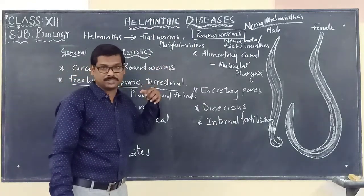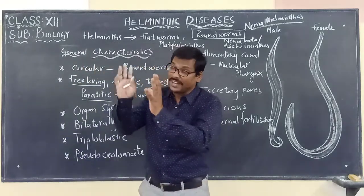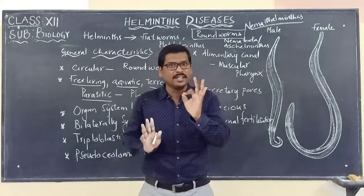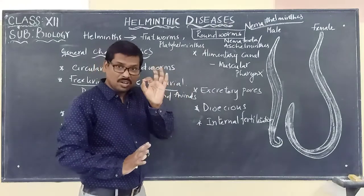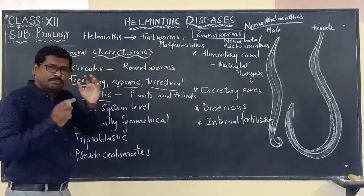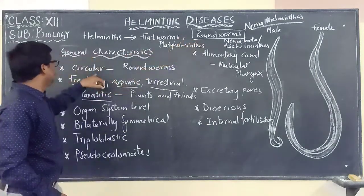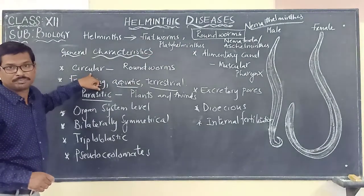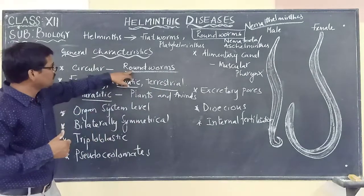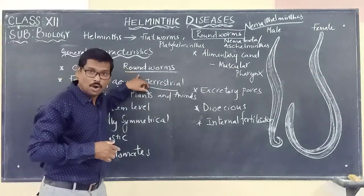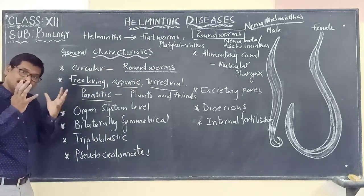If you are looking at the general characteristics of these roundworms, these are very important to identify that particular organism. The basic general characteristics of the roundworms are: these roundworms are circular in cross-section, and that is why they are known as roundworms.